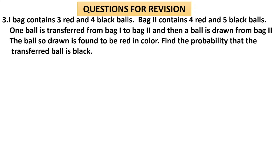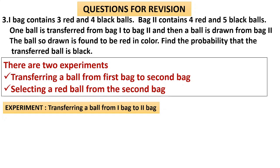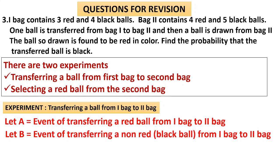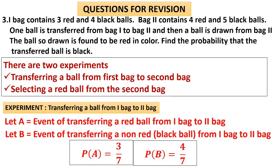Question 3: First bag contains 3 red and 4 black. Bag 2 contains 4 red and 5 black. One ball is transferred from bag 1 to bag 2, then a ball is drawn from bag 2. The ball drawn is found to be red. Find the probability that the transferred ball is black. There are two experiments: transferring a ball, then selecting a red ball from bag 2. Event a = transferring a red ball from bag 1 to bag 2; P(a) = 3/7. Event b = transferring a non-red (black) ball; P(b) = 4/7. These are mutually exclusive and exhaustive, so 3/7 + 4/7 = 1.